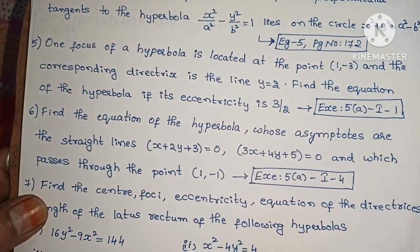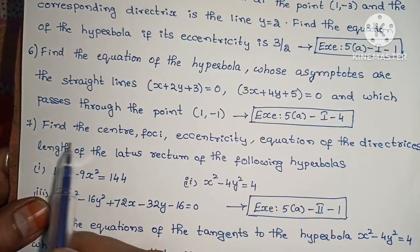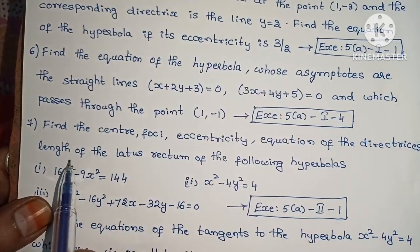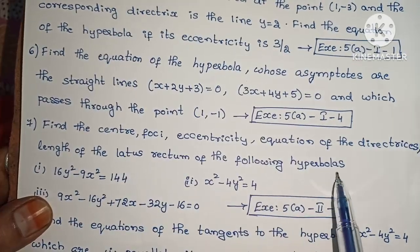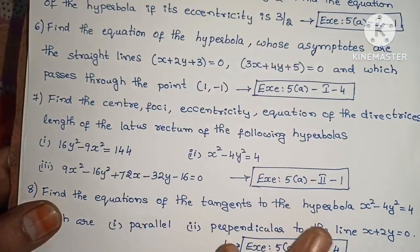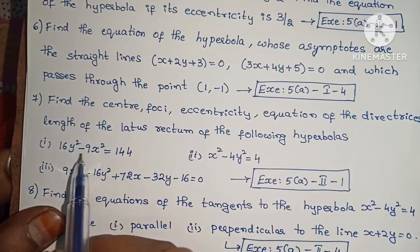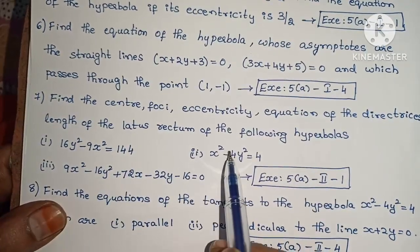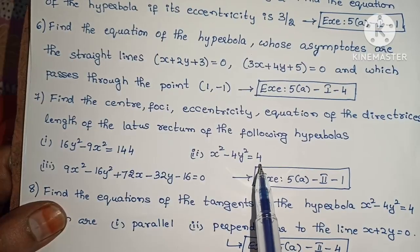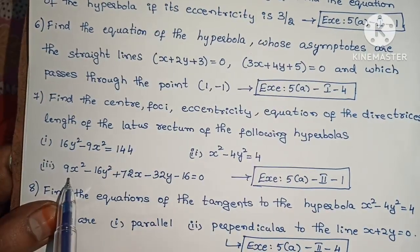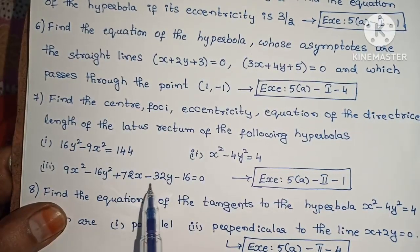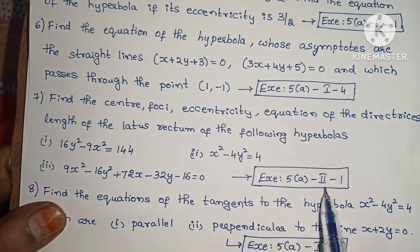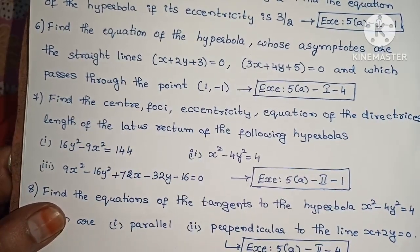Next, find the center, foci, eccentricity, equations of directrices, and length of the latus rectum of the following hyperbolas. Each is a separate 4-mark question. First: 16y² − 9x² = 144. Second: x² − 4y² = 4. Third: 9x² − 16y² + 72x − 32y − 16 = 0. Exercise 5(a), Roman numeral II, problem 1 sub-problems.